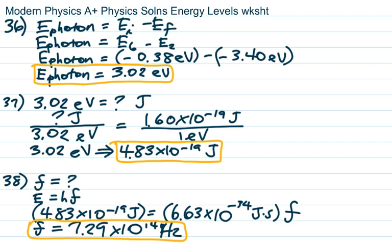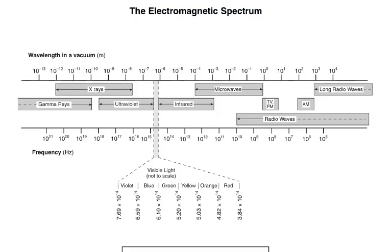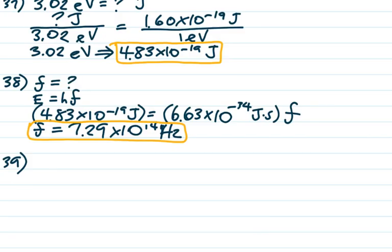Before we move on, I feel like they cheated the classic follow-up when they're like, what type of light is that? And if it's visible, what color? 7.29 times 10 to the 14, let's take a look. These are all the 10 to the 14s down in visible. 7.29 times 10 to the 14 falls between 6.59 times 10 to the 14 and 7.69 times 10 to the 14. It is violet light. Like I said, if you transition from 6 to 2 in hydrogen, you get violet visible light.